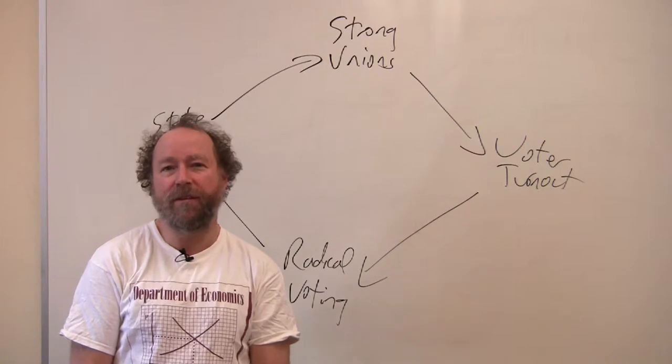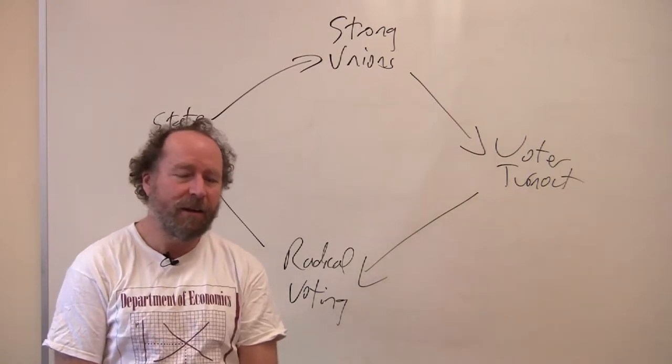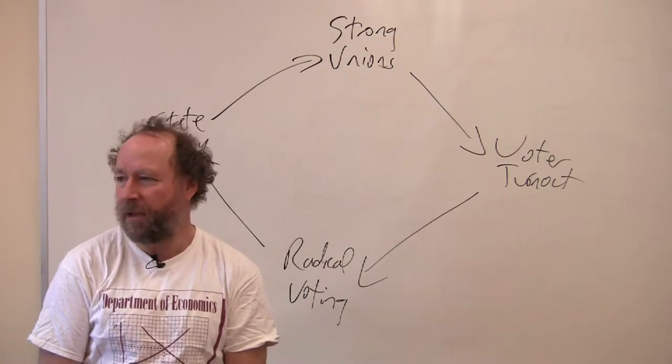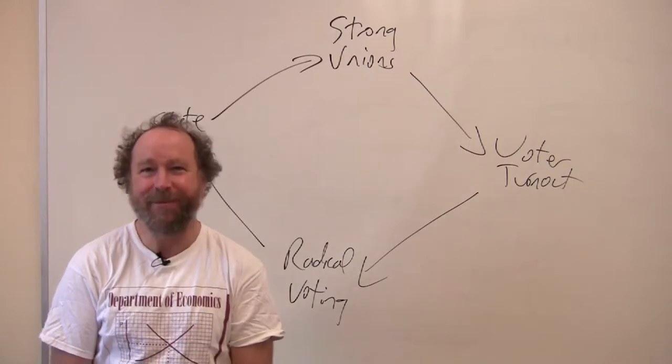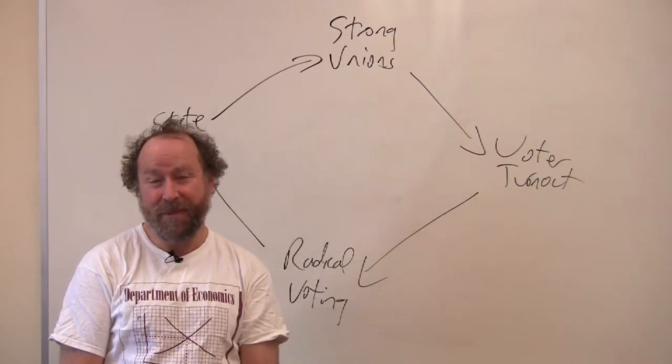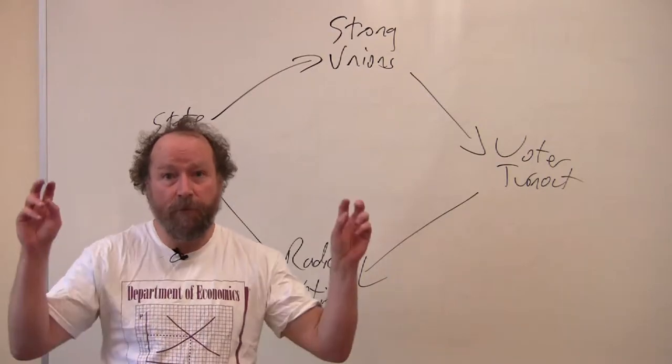Theodore Roosevelt, Governor of New York, Vice President of the United States, rough rider, writer, a human being extraordinaire, became president in 1901 and began a program of reform.